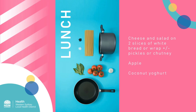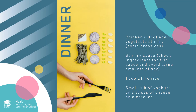Lunch is a cheese salad sandwich or wrap. Cheese is low in choline but high in calcium and protein. Pickles or chutney can be added for extra flavour. A piece of fruit and some coconut yogurt can be included. For dinner, have 100 grams of chicken — the size of your palm — with plenty of vegetables, remembering to avoid brassicas such as bok choy or broccoli as they may inhibit the FMO3 enzyme. Add a stir fry sauce, checking it does not contain fish and avoiding large amounts of soy. Serve with a cup of white rice and a small tub of yogurt or cheese on crackers for dessert.